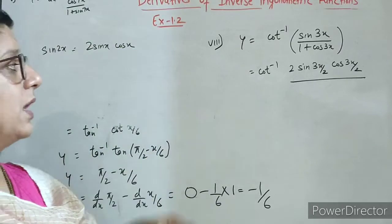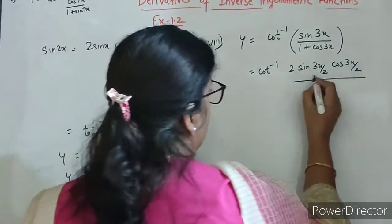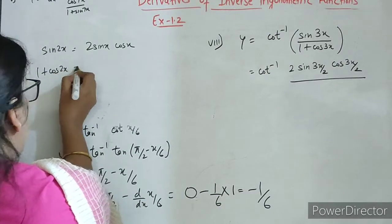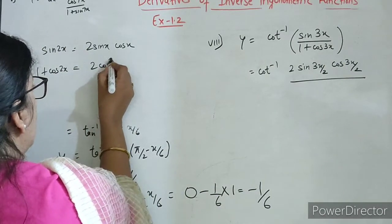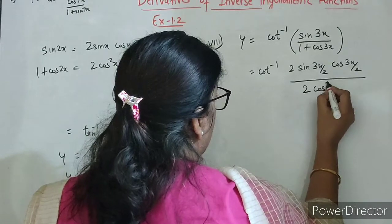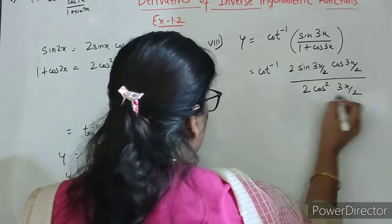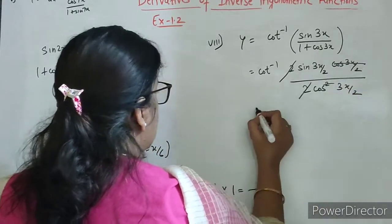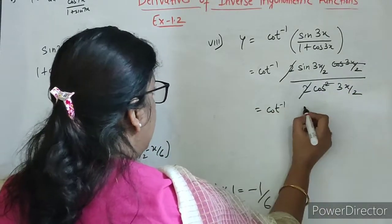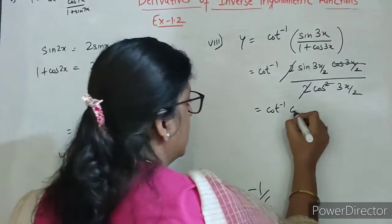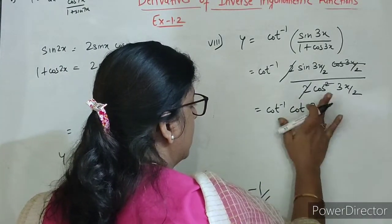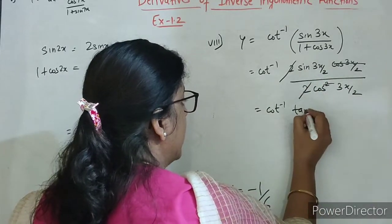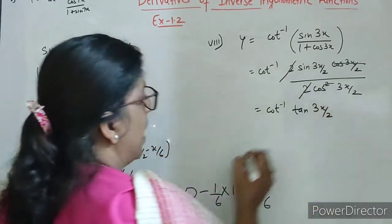So yehaan par yeh form use karenge: 2 sin 3x by 2 cos 3x by 2. And 1 plus cos 2x ka formula 2 cos square x — so yeh ho jayega 2 cos square 3x by 2. Yeh 2 se 2 cancel, 1 cos se 1 cos cancel. So this will be cot inverse of sin upon cos, that is tan 3x by 2.